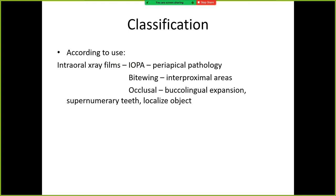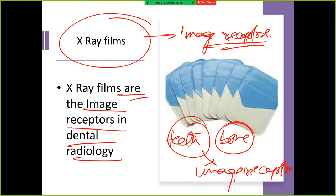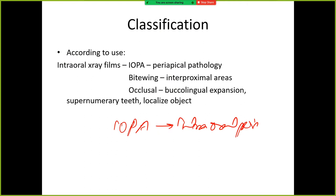One example is IOPA. What is the full form of IOPA? Intraoral periapical. So this is IOPA — intraoral periapical. Where do we use intraoral periapical? Where there is periapical pathology — we use intraoral periapical to see periapical pathology.